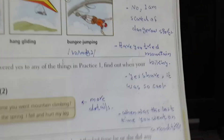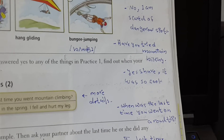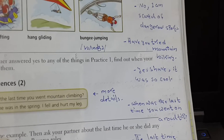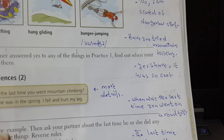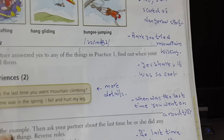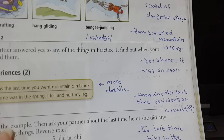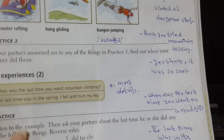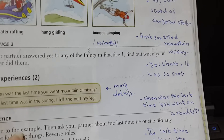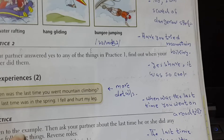Building on the mountain biking example: 'Have you tried mountain biking?' — 'Yes, I have. It was so cool.' Then add another turn: 'When was the last time you tried mountain biking?' — 'It was last summer.' This extends and stretches the conversation with specific details.